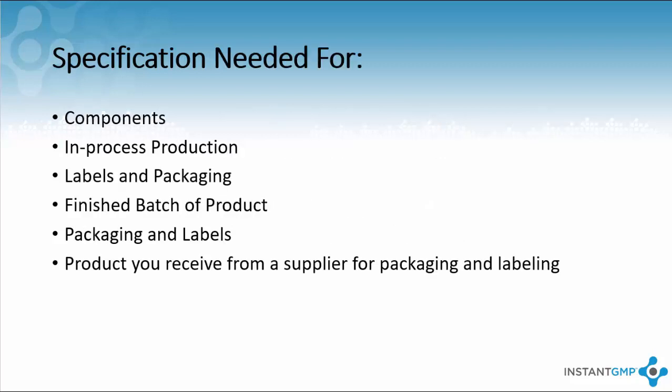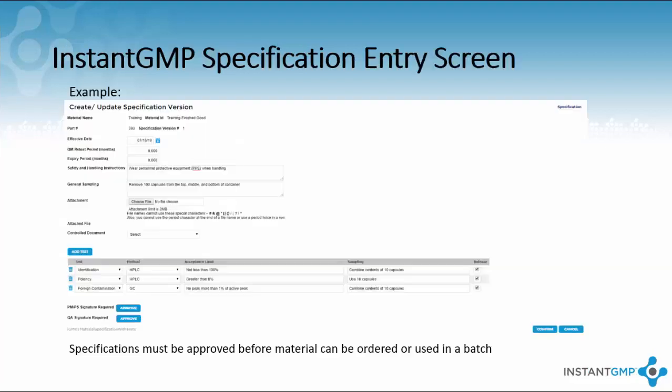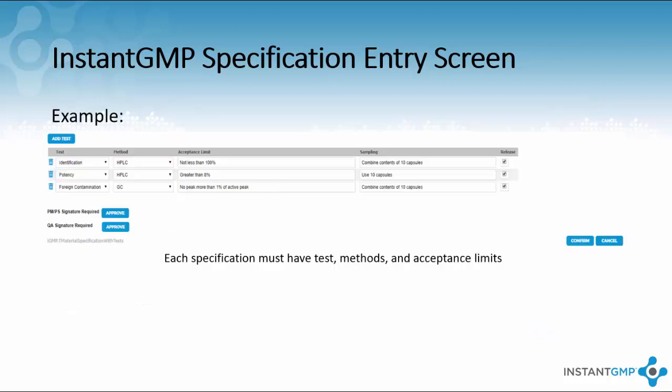Specifications should apply to the final good along with the materials used to make that final good. The specification entry screen auto-fills the material name and number. New specifications start on version 1, but can be versioned up after approval if revisions need to be made. Pick an effective date for this specification. Enter the safety and handling instructions along with general sampling instructions. If there is documentation you wish to attach, you can upload them. Then you can enter the tests associated with these material specifications. Once completed, the specification should be approved by a project manager and quality manager, or some equivalent based on site terminology or job roles.